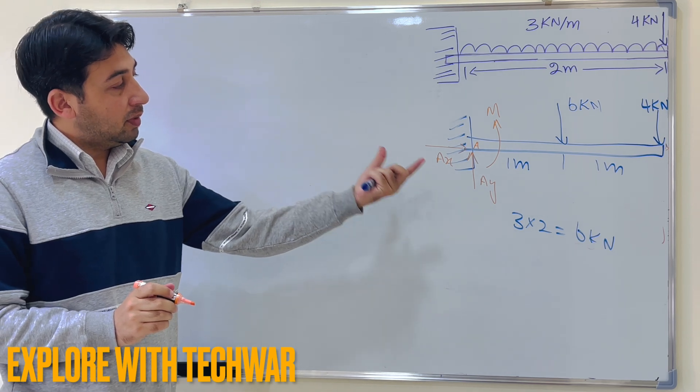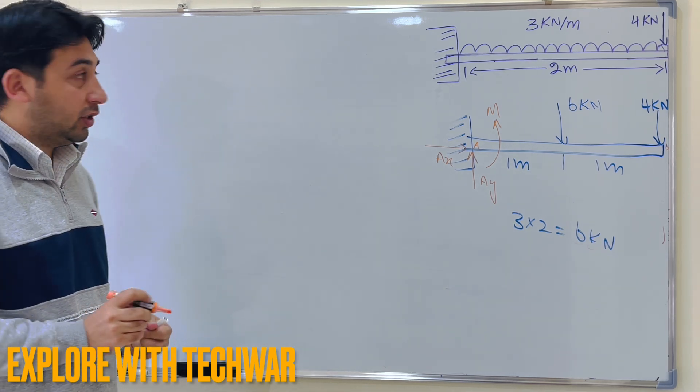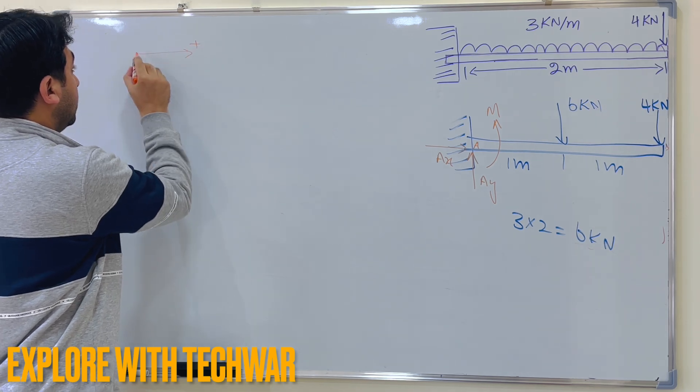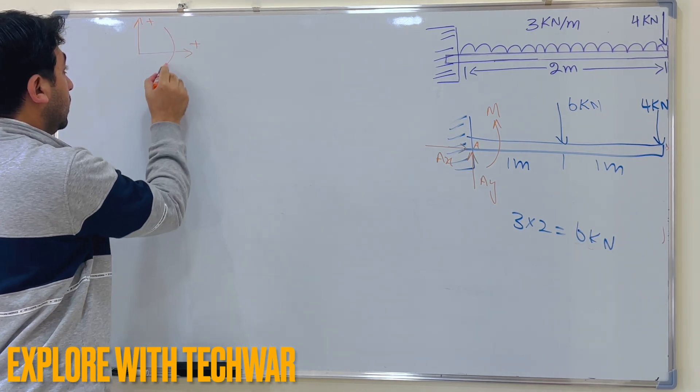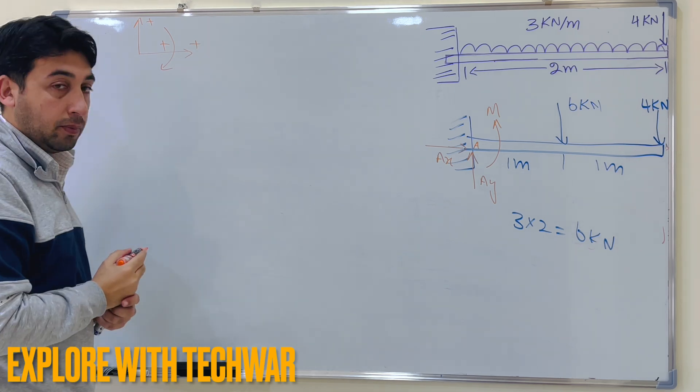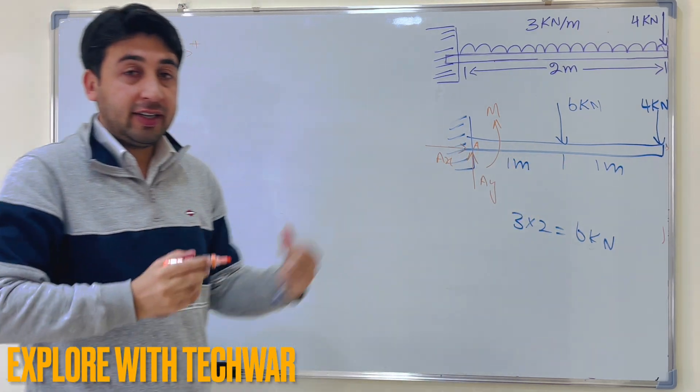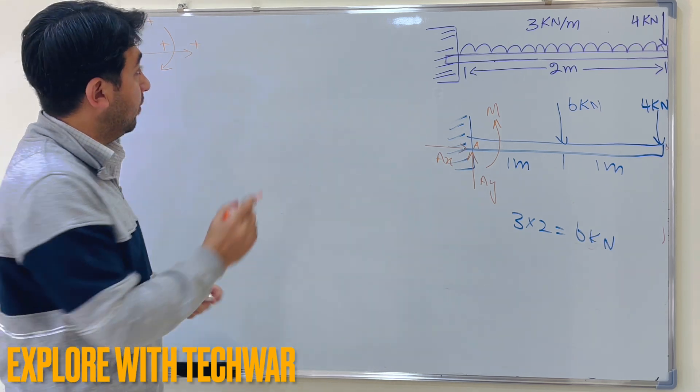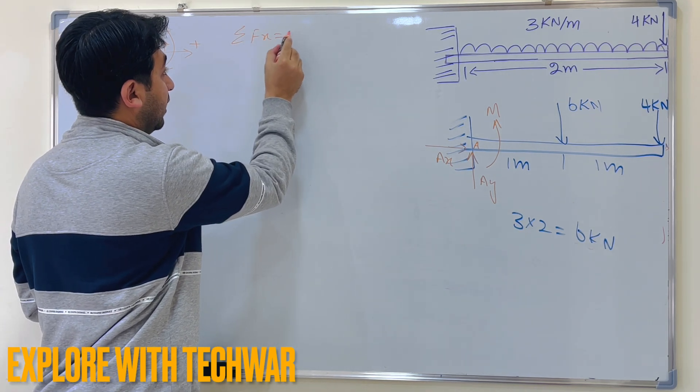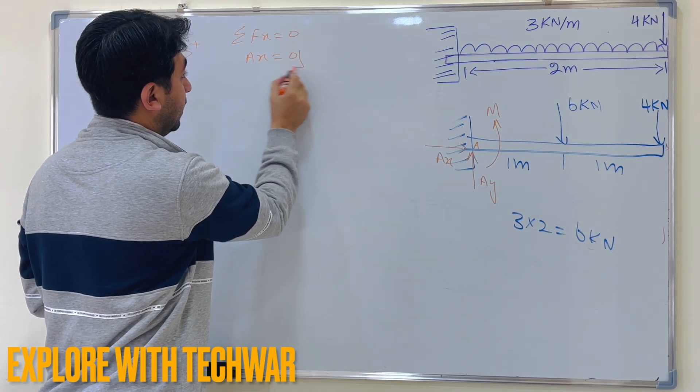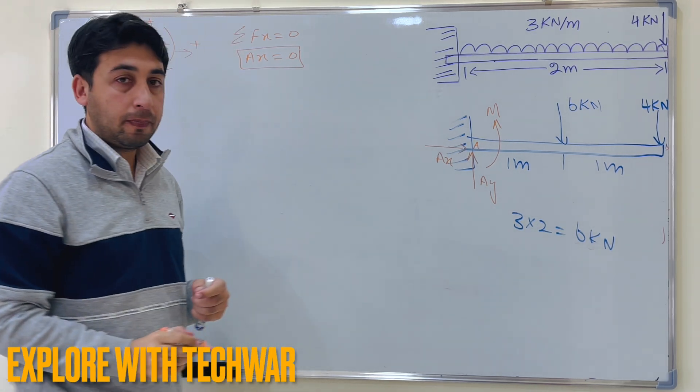Now before solving the problem, I have to set my sign convention and my sign convention for this problem will be positive here, positive here and clockwise positive. So again we can see that there is no force acting in the x direction, so if I take sum of the forces in the x direction equal to 0, so AX is the only force acting in the x direction that will be equal to 0.